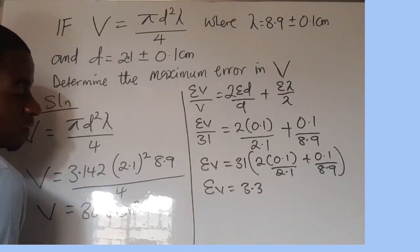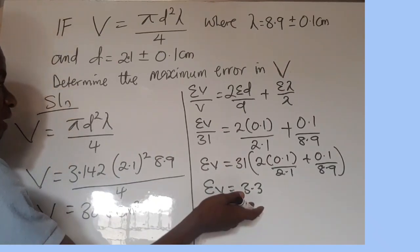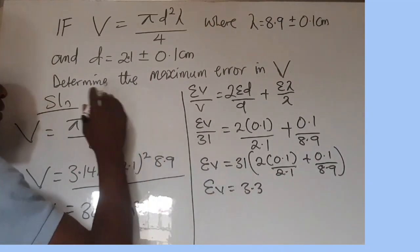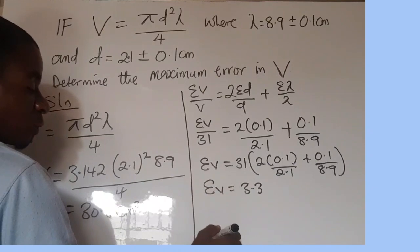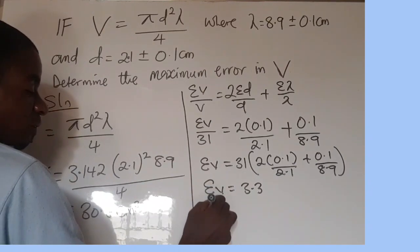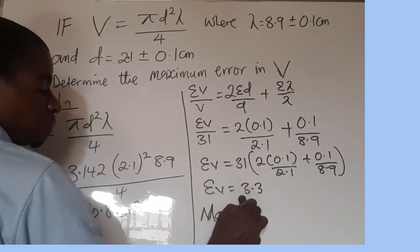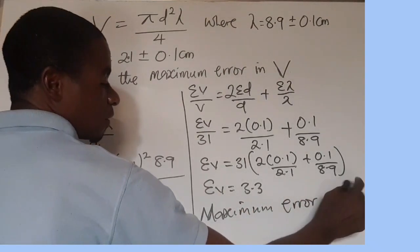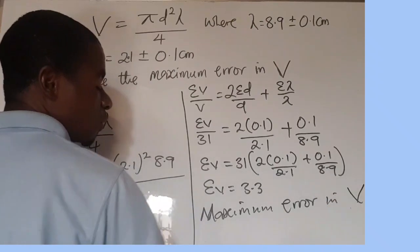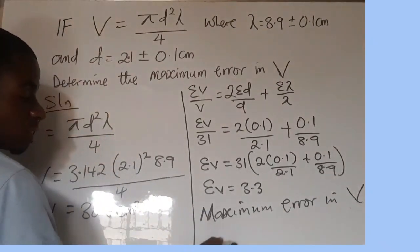So if that is that, this is not exactly the final answer because I said determine the maximum error in V. So to find the maximum error in V, we can say maximum error in V. The maximum error in V can be written like this.